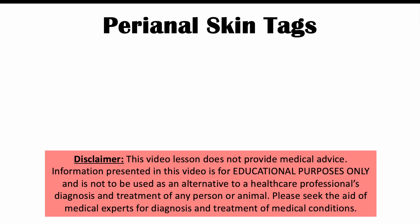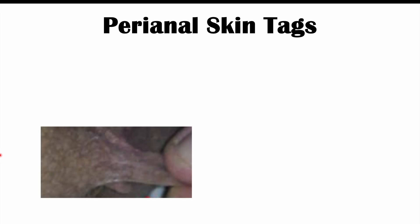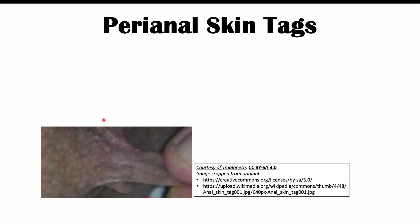Hi everyone, this lesson is on perianal skin tags. Perianal skin tags are something that patients may have and may overlook, but they can indicate a potential underlying condition that is important to recognize. If you have things like this near the anal opening, these would be perianal skin tags — a loose piece of stretchy skin hanging in that area.